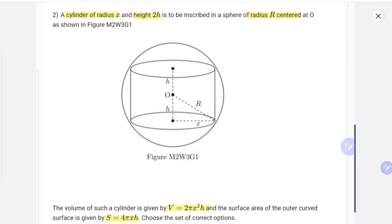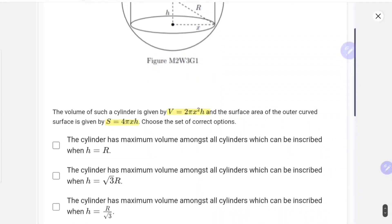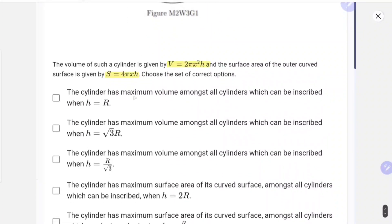We have to select the correct option. You can clearly see in the options we have maximum volume or maximum surface area. So we have to find the value of h where the surface area and volume are maximum. Let's do it.